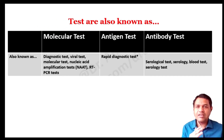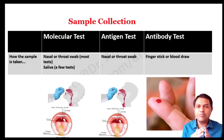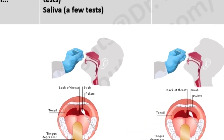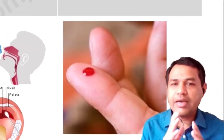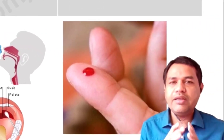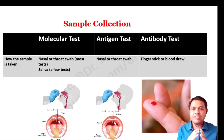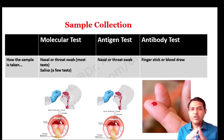Sample collection is the most important step. For the molecular test, a nasal or throat swab is taken; sometimes saliva is also collected. For the antigen test, a nasal or throat swab is also taken. For the antibody test, a finger stick or blood draw is used.